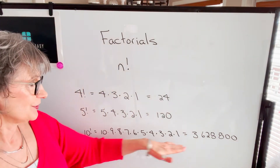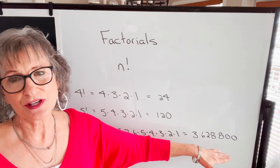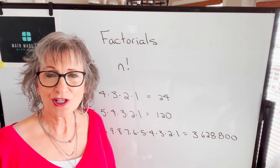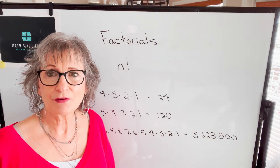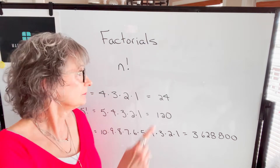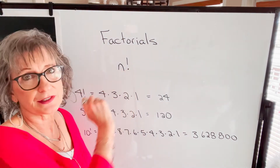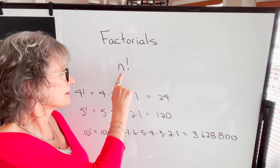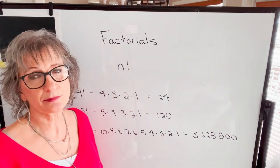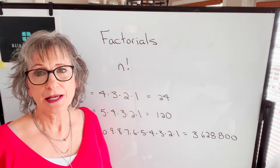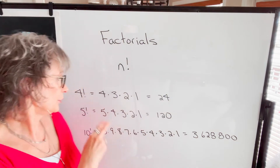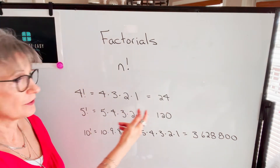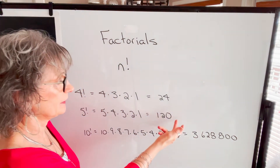As you can see, the numbers get very large very quickly with factorials. Your calculator will have a factorial button — it looks just like that with an exclamation mark. It might be an X and then an exclamation mark. You put your number in, press that function, and you will get these values.